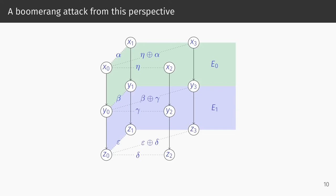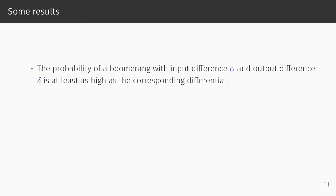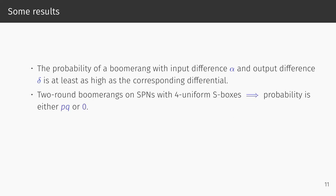Here I would like to present some of the statements we are able to prove in this model. The first stands somewhat in contrast to the strange theorem from earlier: the probability of a boomerang with input difference alpha and output difference beta is at least as high as the corresponding differential. Another very interesting result is this: for two-round boomerangs on SPNs with four uniform S-boxes, the probability deviates maximally from the classical estimate. The probability is always p times q, or 0, but never p squared times q squared. A consequence is that one needs to be careful evaluating the probability of boomerang attacks over such SPNs, as they can deviate strongly from the classical estimate.